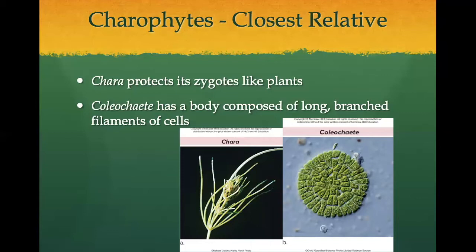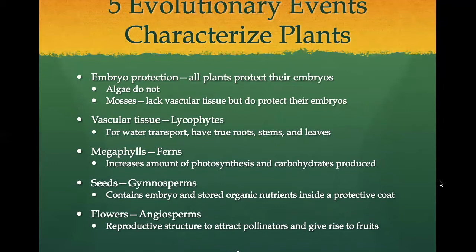Over their evolutionary history, plants have become well adapted to a land existence. Although a land environment offers advantages such as plentiful light, it also has challenges such as the constant threat of drying out or desiccation. Most importantly, all stages of reproduction — gametes, zygote, and embryo — must be protected from the drying effect of air. To keep the internal environment of cells moist, a land plant must acquire water and transport it to all parts of the body while keeping the body in an erect position. We will see how plants adapted to these problems by evolving an internal vascular system.